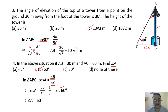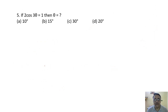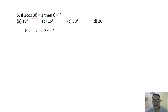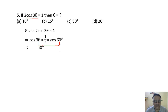Question 5: 2cos 3θ = 1, find θ. So cos 3θ = 1/2, which equals cos 60°. Therefore 3θ = 60°, giving θ = 20 degrees. The correct option is option D.